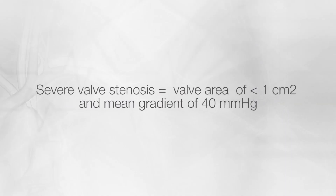A valve area less than one centimeter squared and a mean gradient greater than 40 millimeters of mercury is generally considered severe. In select cases, we also use cardiac CT or cardiac catheterization to better understand the severity of narrowing.